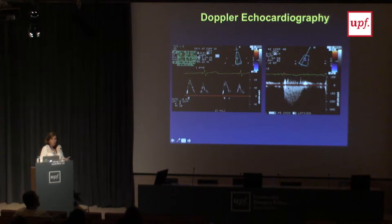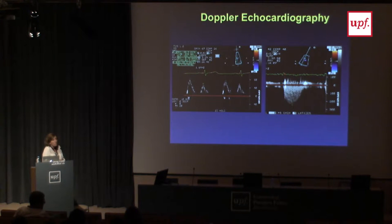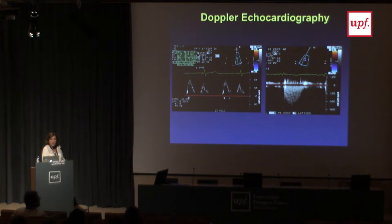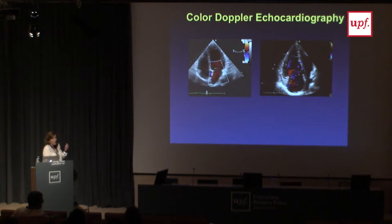Continuous wave Doppler is mainly applied to look at flows with high velocities, which is what we get when we have narrow valves — for example in valve stenosis. These diseases cause narrowing where flow should go out, and we get velocities beyond three meters per second. Before Doppler cardiography, we had to put a catheter inside the heart to evaluate these diseases. Now we do that non-invasively with transthoracic echocardiography — cheap, easily available. This was a revolution in cardiac imaging.